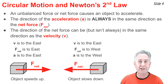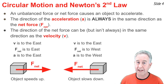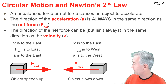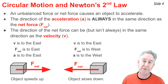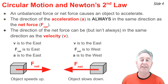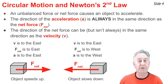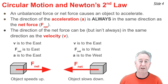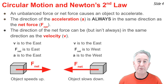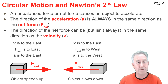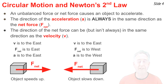In our second case, the object is moving eastward again, but the net force is directed westward, against the motion. Thus, the acceleration must also be westward. In this case, with the force going against the motion of the object, the object would slow down.